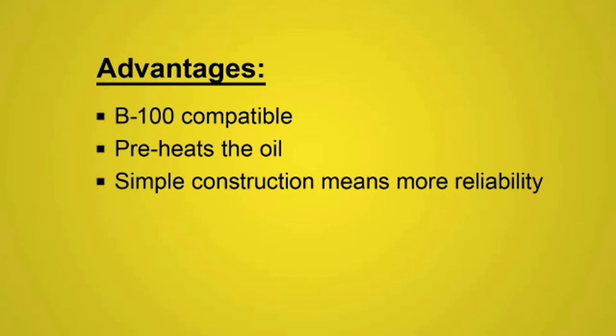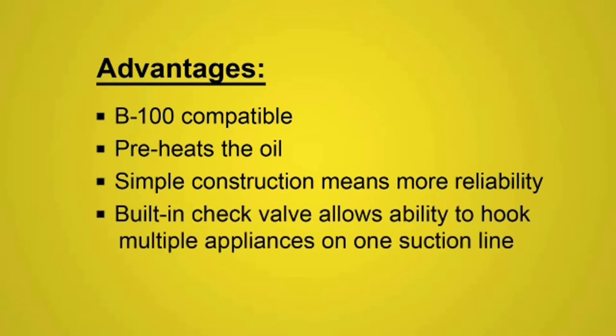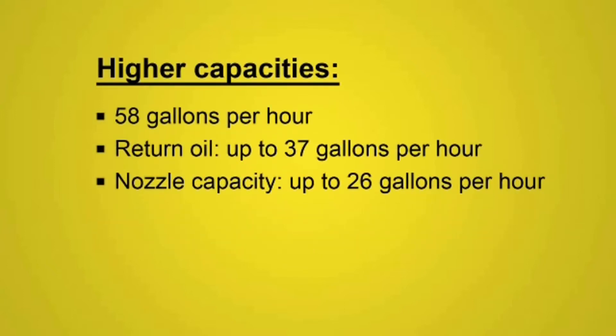This deaerator has simple construction, meaning more reliability. No diaphragms, just a simple throttling valve on the bottom. A built-in check valve allows the ability to hook multiple appliances on one suction line, using a single deaerator per appliance, without worry of one appliance pulling the oil from the other. This design allows for higher capacities, with a maximum capacity of 58 gallons per hour. This is a combination of return oil and nozzle capacity.